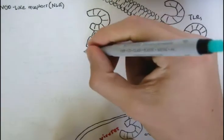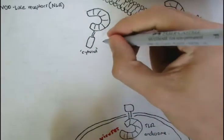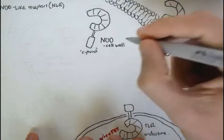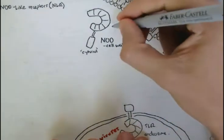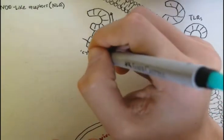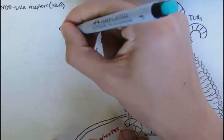The NLRs and the toll-like receptors are similar in structure. The NOD-like receptors usually recognize cell walls of a pathogen. They contain an LRR domain and a caspase recruitment domain at the bottom, also known as CARD.